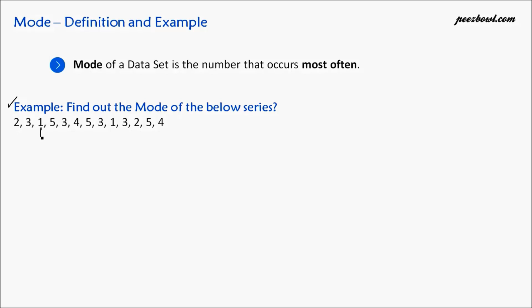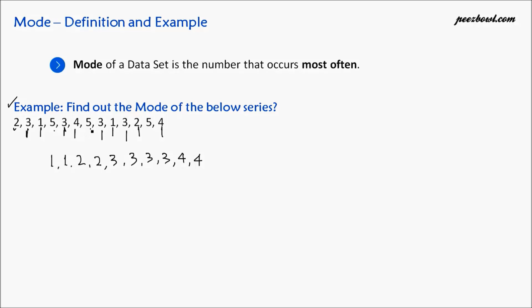In this series, we have one which has the least value — one is coming two times. After that we have two, two times. Next we consider three: this three, then this three, then this three, then this three — four times. After three we have four, two times. Then five, five, five — three times.